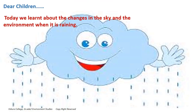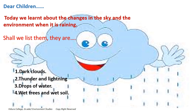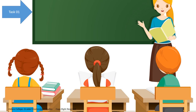Dear children, today we learned about the changes in the sky and the environment when it is raining. Shall we list them? They are: dark clouds, thunder and lightning, drops of water, wet trees and wet soil, and puddles of water on the ground.